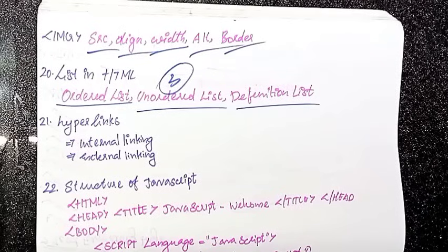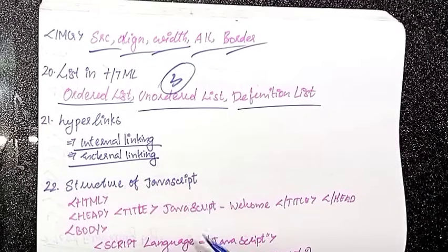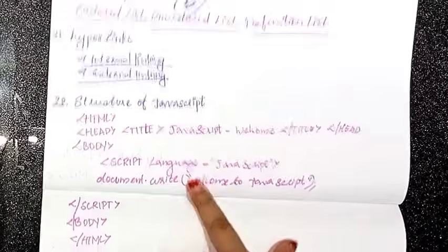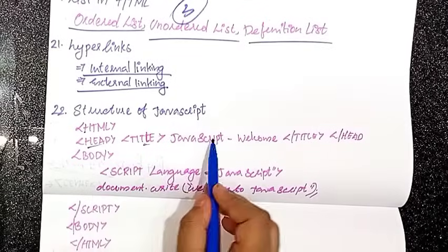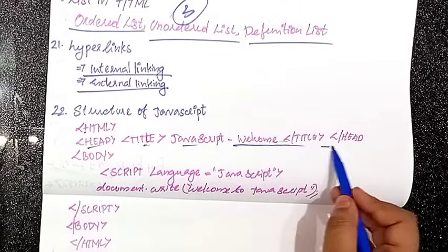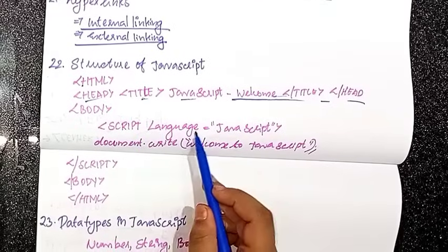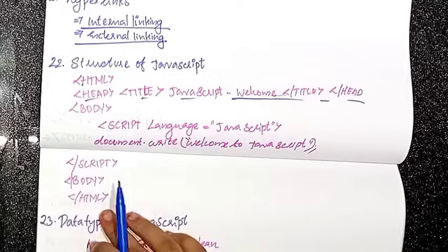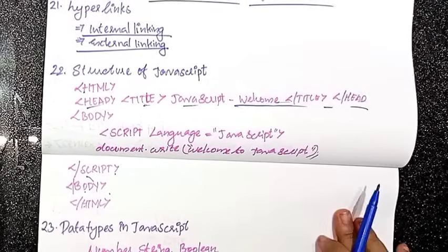The next topic is the hyperlink. Then the structure of JavaScript: HTML, head, title, JavaScript, welcome, title. Then the script tag with language equal to JavaScript, document.write, welcome to JavaScript — then close script, body, and HTML.